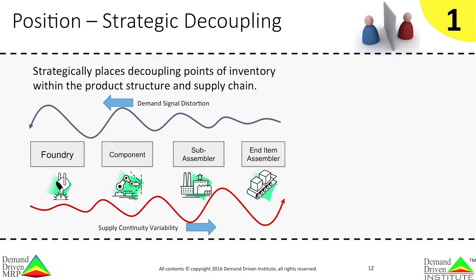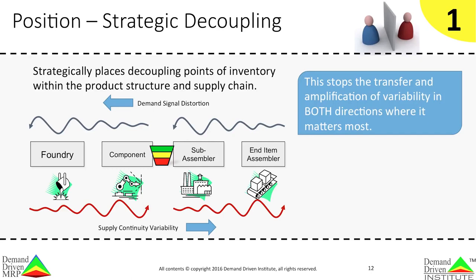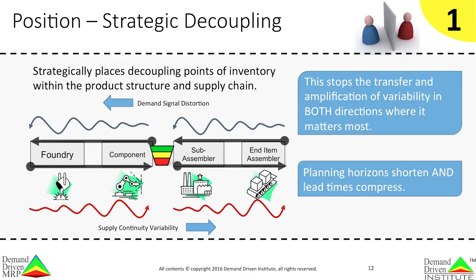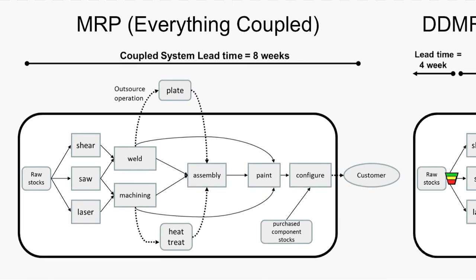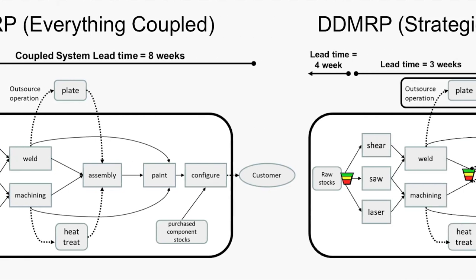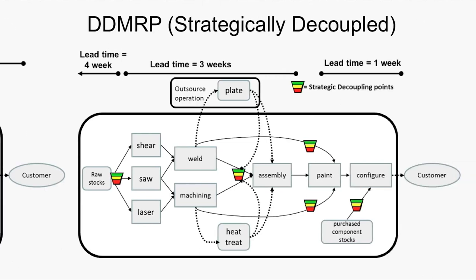DDMRP strategically places decoupling points of inventory within the product structure and supply chain. These points are carefully selected through a variety of factors. This placement stops the transfer and amplification of variability in both directions at these strategic points. Planning horizons shorten and lead times compress immediately. Here we see the difference between the way MRP and DDMRP view planning. On the left, MRP couples every activity together — this produces a longer planned lead time and means that date and quantity changes in one thing affect everything. On the right, we see a DDMRP design, where decoupling points have been used to create shorter, independent planning horizons that stop the cascading effect of changes at critical areas. The market lead time has been compressed to one week.